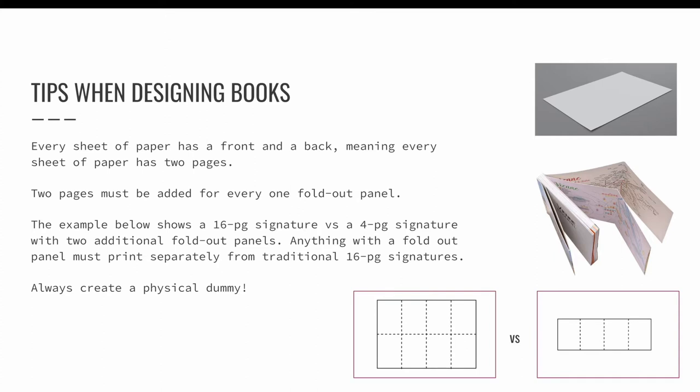Look at the bottom example. A 16 page signature prints on the left press sheet. The right press sheet is a four page signature that has a fold-out panel on either side. It must be printed separately from traditional 16 page signatures. This is incredibly important to recognize because it affects where fold-out panels can be added to a design and what binding methods can be used.